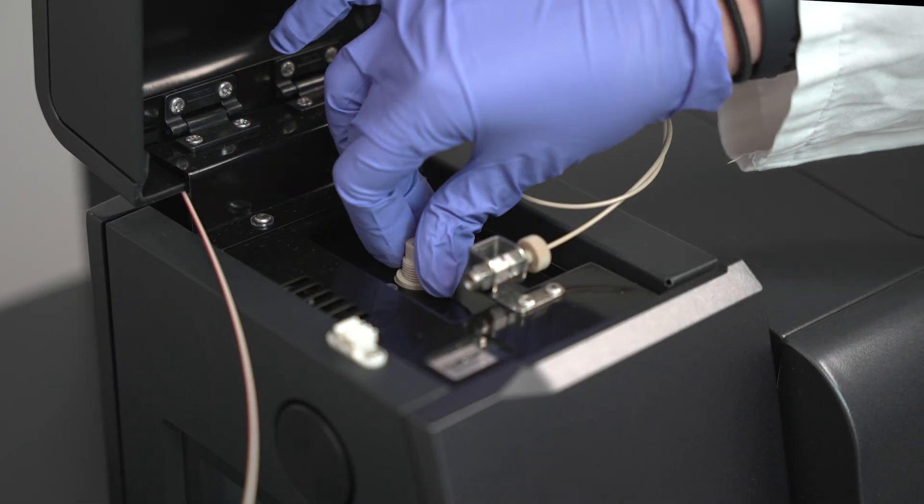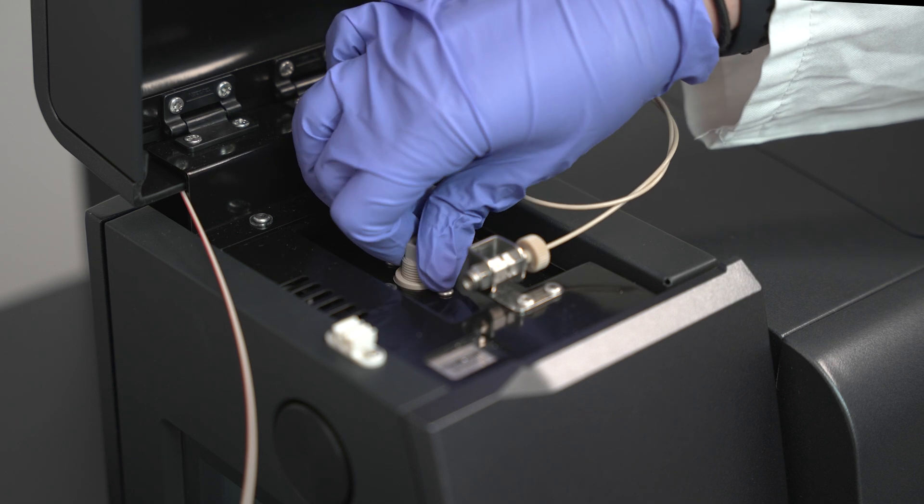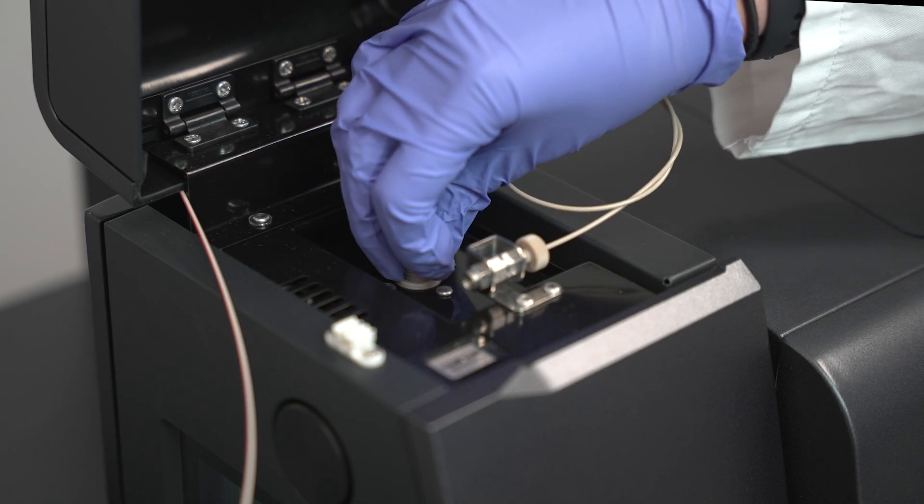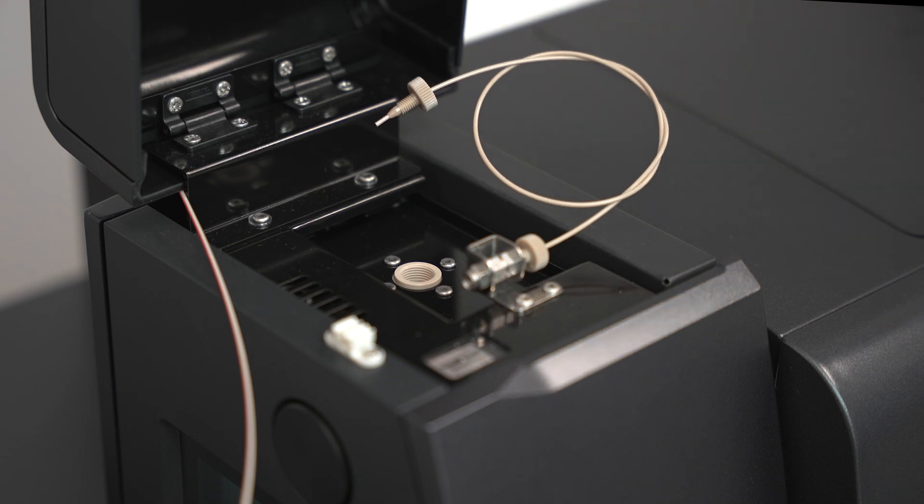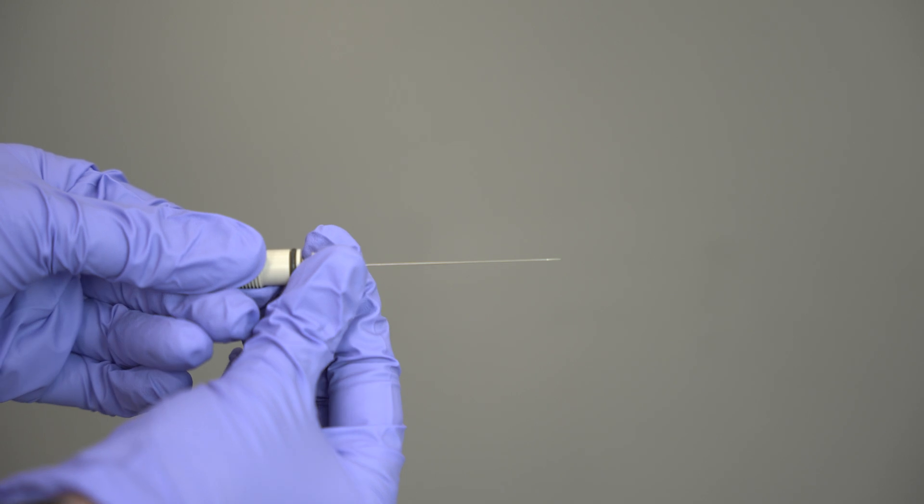Next, remove the ESI coupling and capillary assembly by turning it counterclockwise and lifting it straight up from the source. You can use your fingers for this, or if the coupling is too tight, you can use the 8mm wrench as demonstrated in the instruction manual.